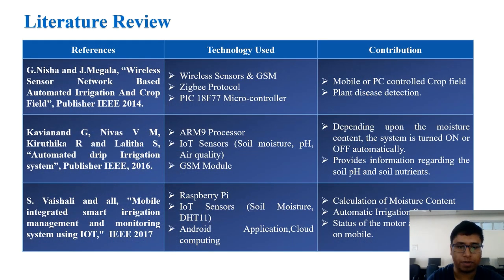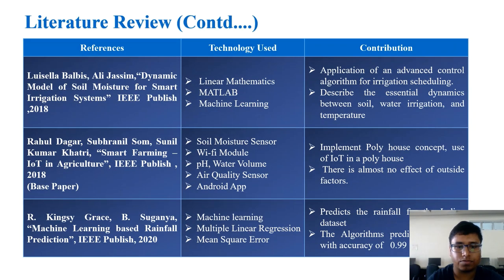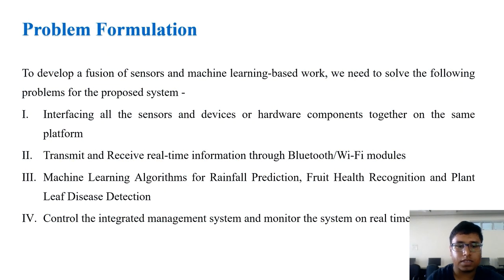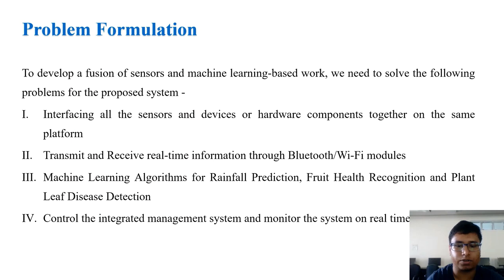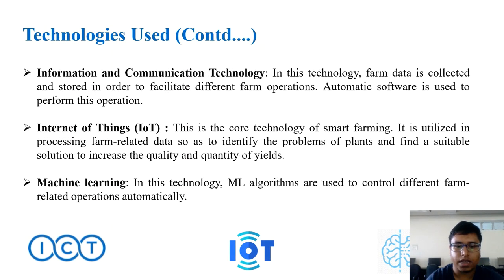After studying several papers, we concluded some key points and determined problem formulations. The first task is interfacing all sensors and hardware components together on the same platform, then transmitting and receiving real-time information through Bluetooth and Wi-Fi modules, then applying machine learning algorithms for rainfall prediction, fruit recognition, and plant leaf disease detection, and monitoring the integrated management system on a real-time basis.